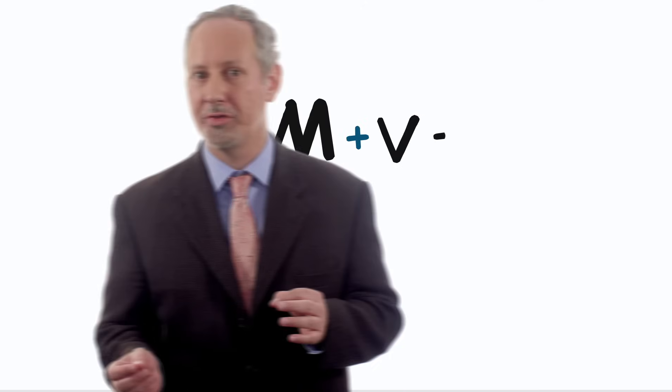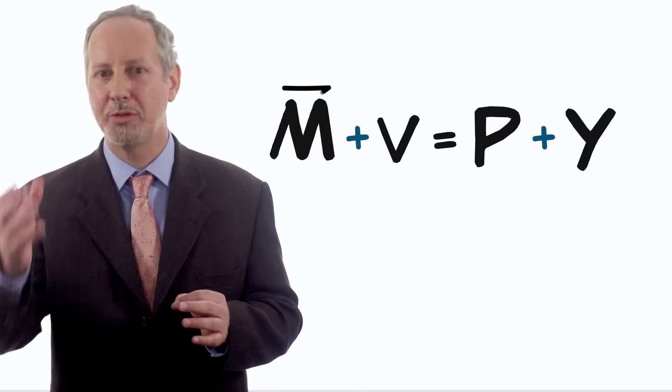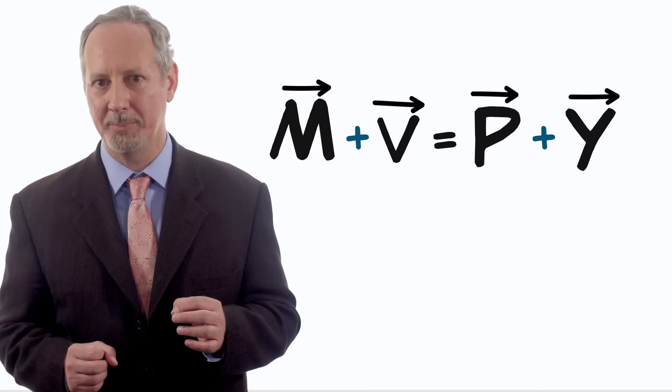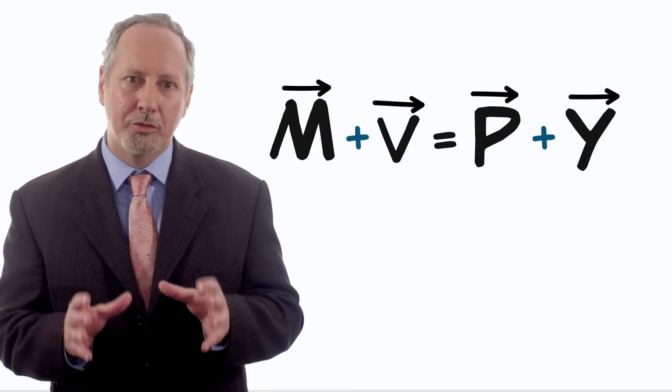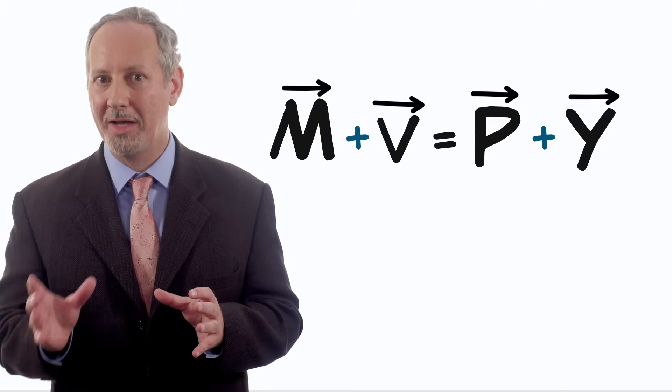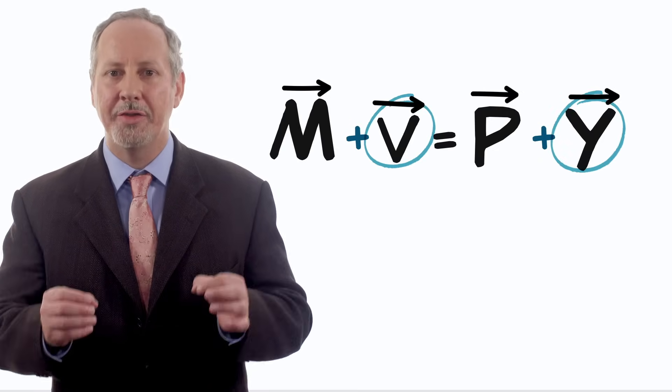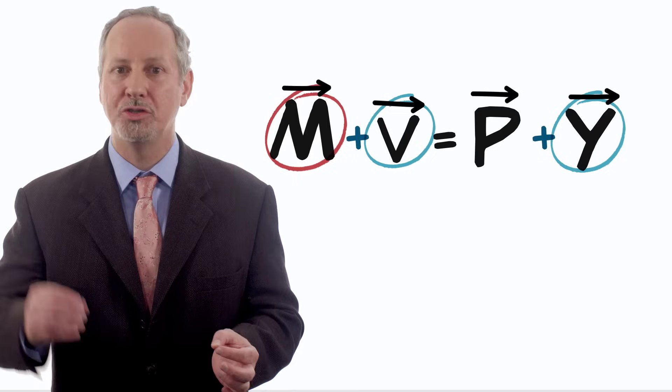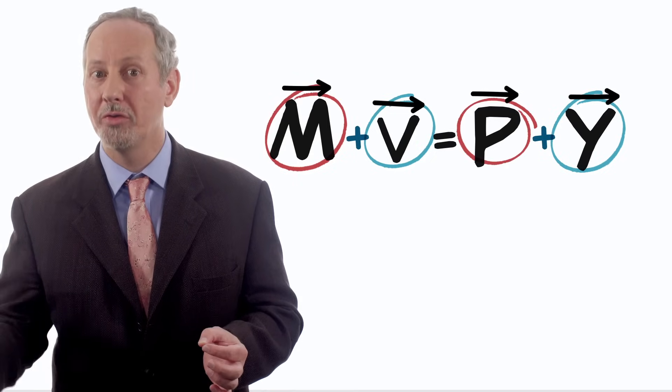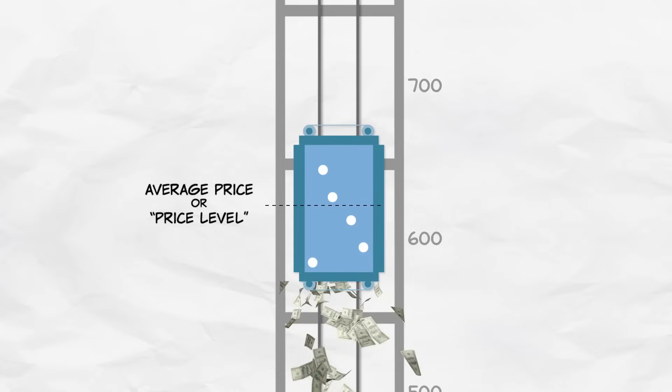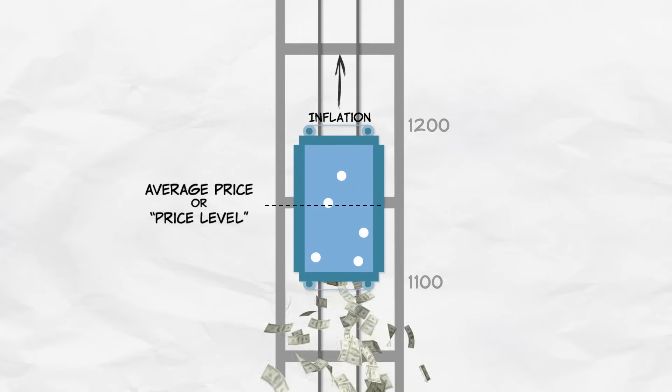We can also write the quantity theory in terms of growth rates, which we'll indicate with a little arrow above the variable. What the growth form of the quantity theory tells us is that if V and Y are not growing too much, then the growth rate of M should be equal to the growth rate of prices. And remember, the growth rate of prices is the inflation rate.